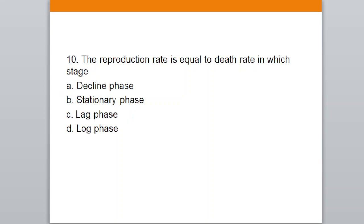Question ten: the reproduction rate is equal to the death rate in which stage? Options: A. decline phase, B. stationary phase, C. lag phase, D. log phase. Your correct answer is option B — stationary phase.